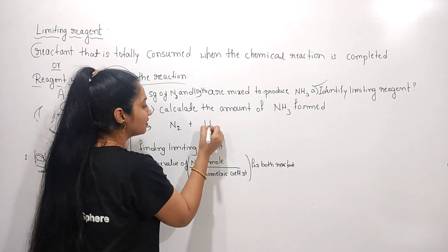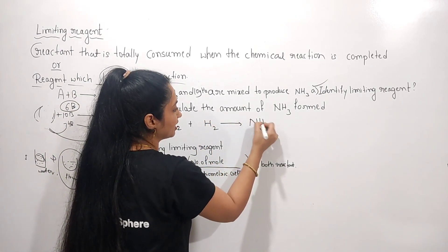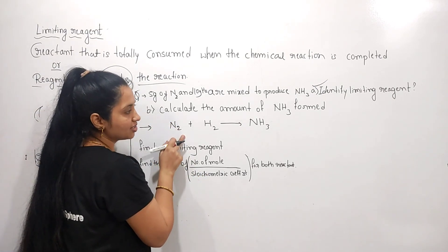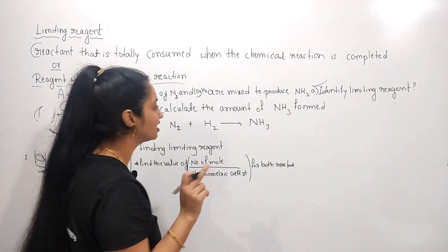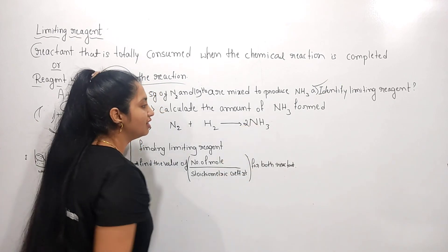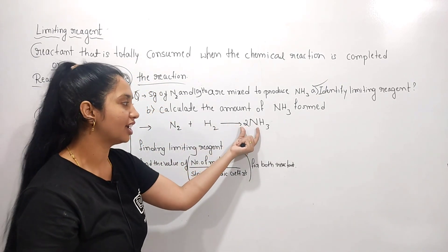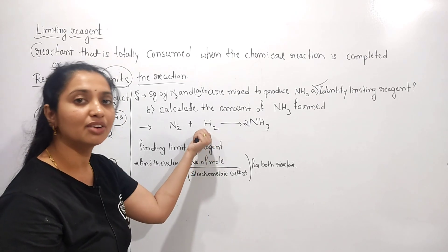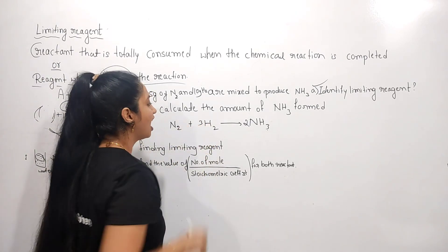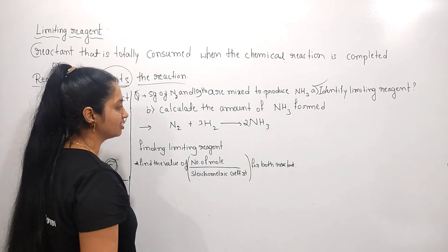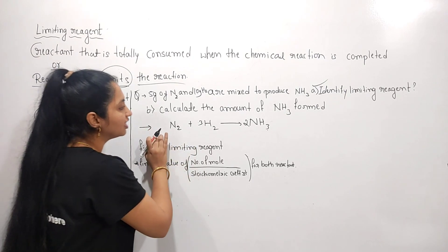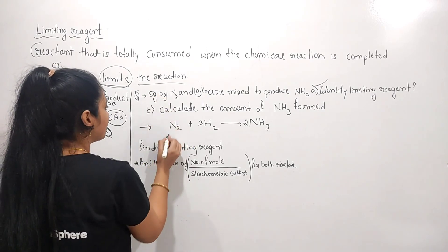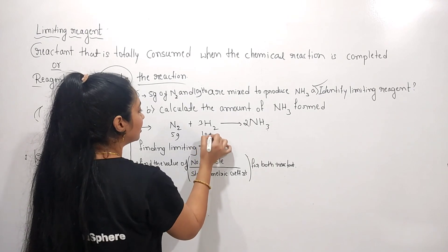Nitrogen reacts with hydrogen to give ammonia. To balance this: on the reactant side we have 2 nitrogens in N₂, and on the product side only 1 nitrogen in NH₃, so I put a 2 in front of NH₃. That gives 6 hydrogens on the product side, but only 2 on the reactant side, so I put 3 in front of H₂. Now the balanced equation is N₂ + 3H₂ → 2NH₃. The nitrogen mass given is 5 g and hydrogen mass is 10 g.